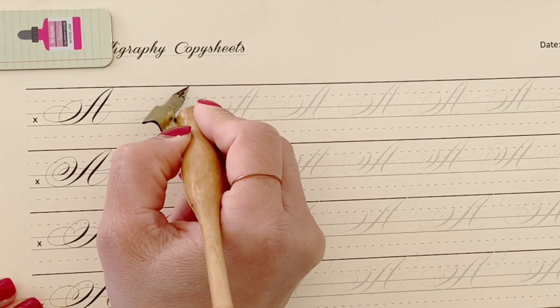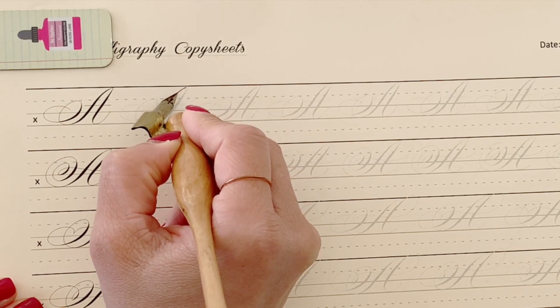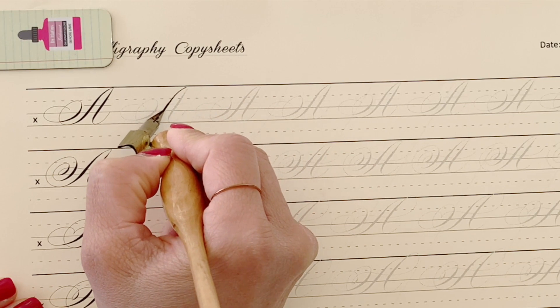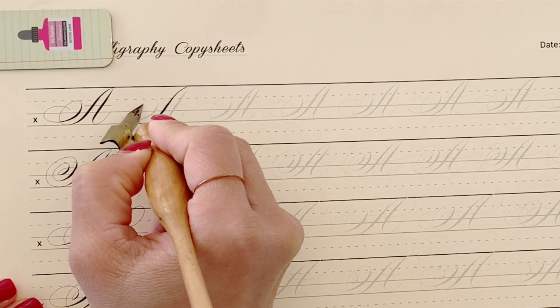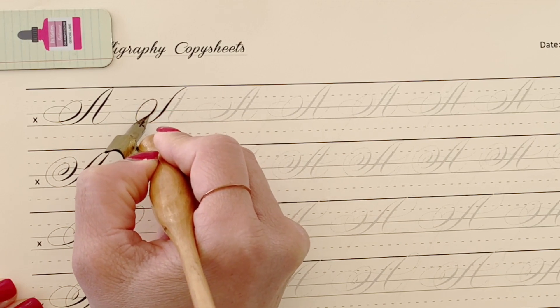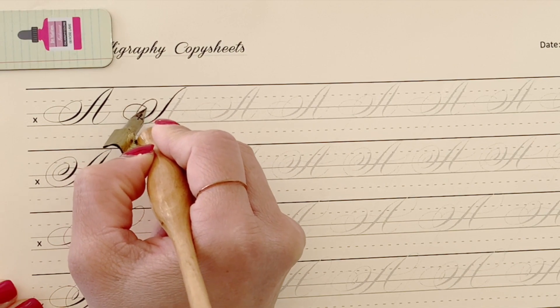So first, you want to land your nib here and start with light pressure. Then add, then reduce the pressure, and come up onto an oval. Add pressure and make into a horizontal oval.